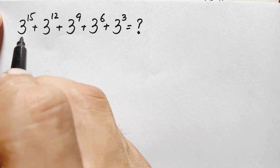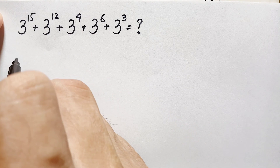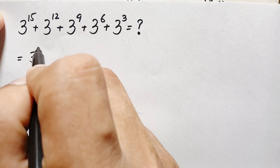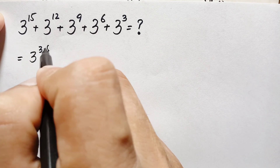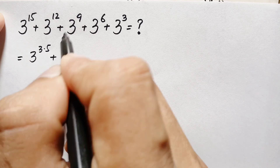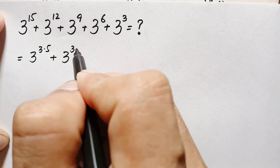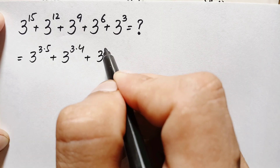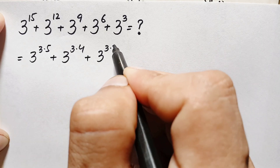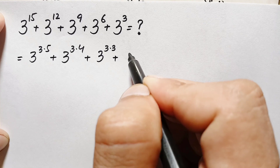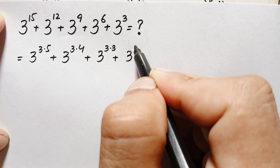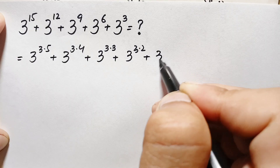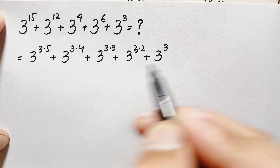To solve this problem, we first rewrite the exponents: 15 can be written as 3 times 5, 12 as 3 times 4, 9 as 3 times 3, 6 as 3 times 2, and 3 as 3 times 1. So we express each term with exponents as multiples of 3.